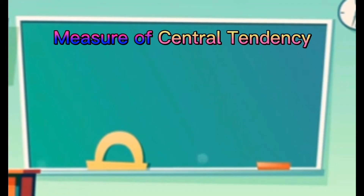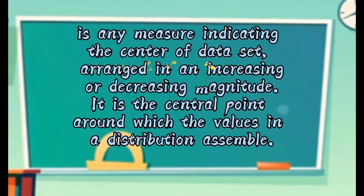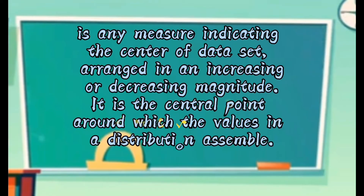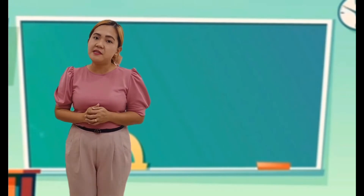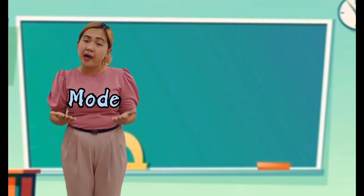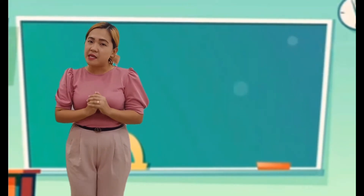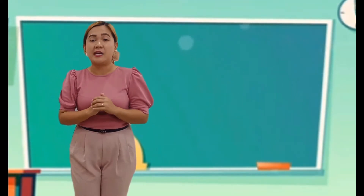Measure of Central Tendency: This is any measure indicating the center of a data set. It is arranged in an increasing or decreasing magnitude. It is the central point around which the values in the distribution assemble. The measures of central tendency are: the mean, the median, and the mode.